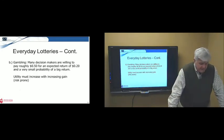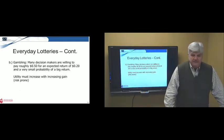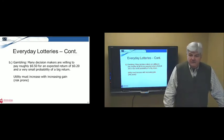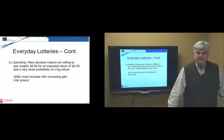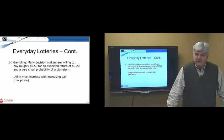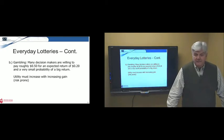About gambling, many decision makers are willing to pay roughly $0.50 for an expected return of $0.20. This is typically what you get with a state lottery, for example. And a very, very small probability of a big return. This says utility function must increase. People are risk-prone. Buying lottery tickets, people are risk-prone. Buying insurance, they're risk-averse. They want to avoid the chance of a large loss. They're risk-prone with gambling because they want to attain the chance of a huge gain, even though it's a very, very small probability.